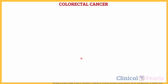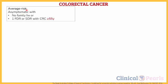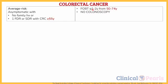Patients are categorized according to their risks. Average-risk patients are those who are asymptomatic with no family history, or one first-degree or second-degree relative with colorectal cancer diagnosed at 55 years or beyond. Surveillance is done by doing an FOBT every 1 to 2 years from 50 years old up until they're 74 years old. Note that colonoscopy is not recommended among these patients.